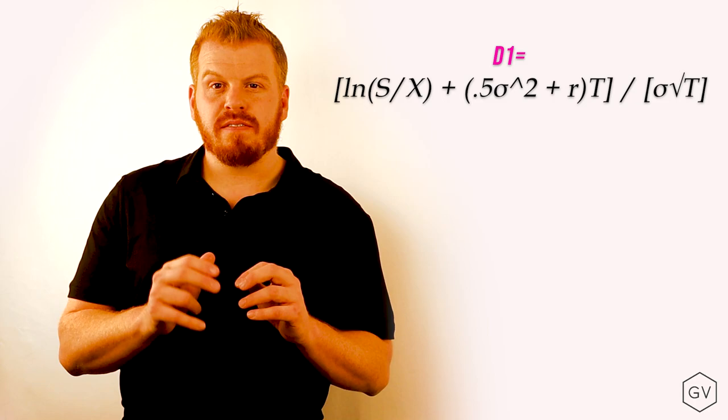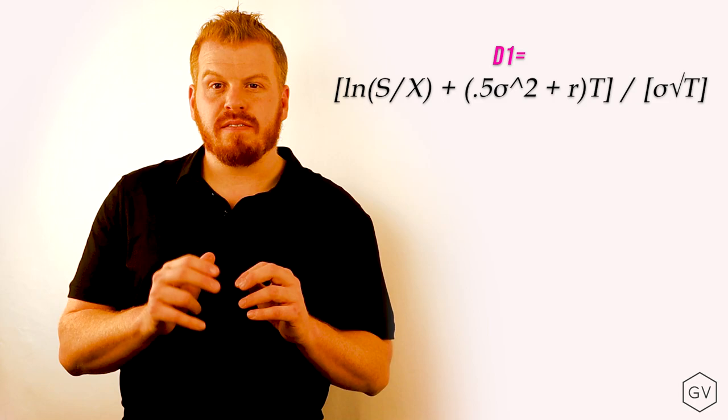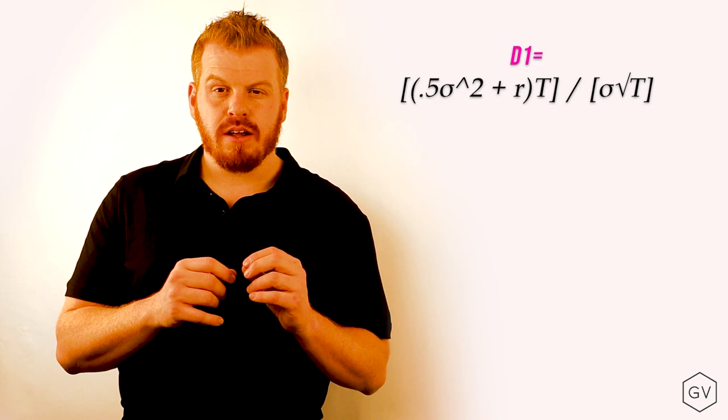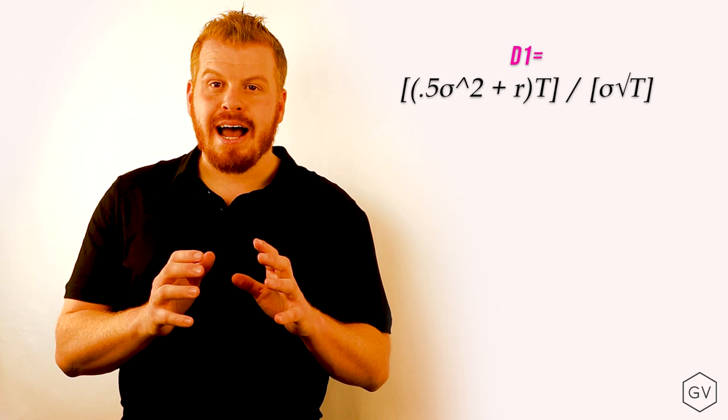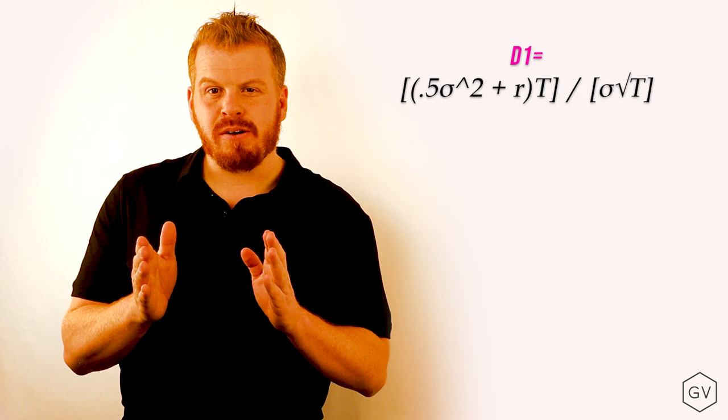Let's look at the numerator of the second part of D1. 0.5 times standard deviation squared plus R all times T. The reason why we add 0.5 variance squared is because only half the variance is going to work in our favor. The other half is not.